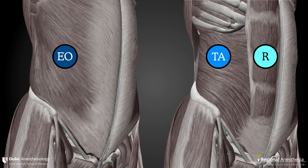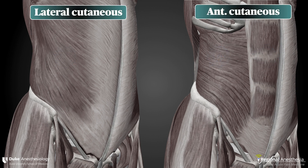Here we see the superficial muscles of the abdomen. On the left, the external oblique and its aponeurosis cover the entire lateral abdominal wall. On the right, we've peeled away the external and internal obliques and we can see the transversus abdominis and rectus abdominis muscles. We've done this so we can see both the lateral and anterior cutaneous branches of the relevant nerves and where they travel. We have the lateral and anterior cutaneous branches of T10. You can see that the lateral branch divides and sends a twig posteriorly, while the anterior branch, two layers deeper, keeps on going until it pops out through the rectus.